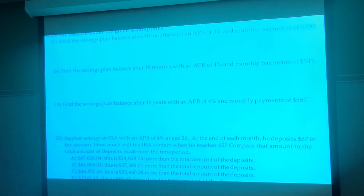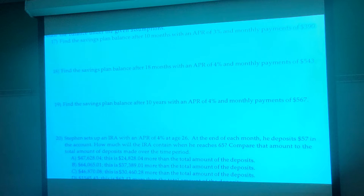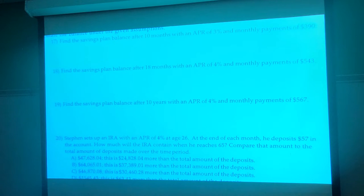Let's start with number 17, savings plan balance after 10 months — that was a tricky one. Because we did 10 months on that one, what do we do when we have months? You can put it over 12. In the N field you can say N equals 12 times 10 over 12, or alternatively there's something we can do right off the bat without doing the monthly times 10 over 12.